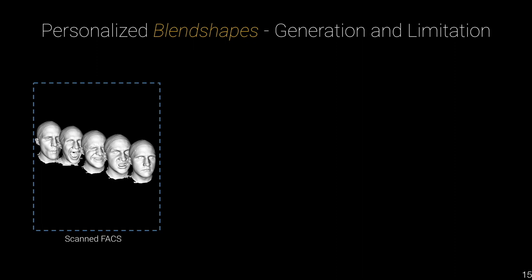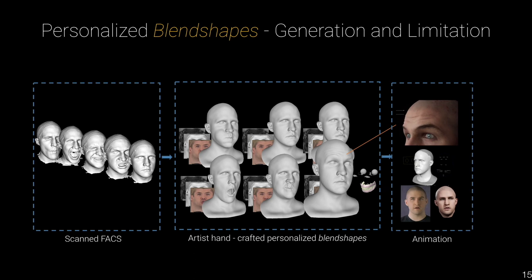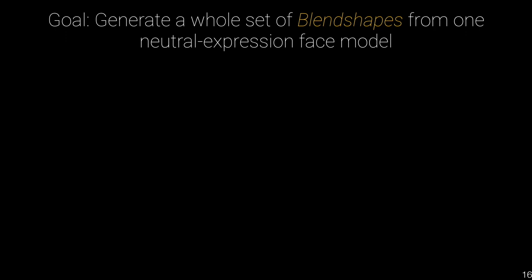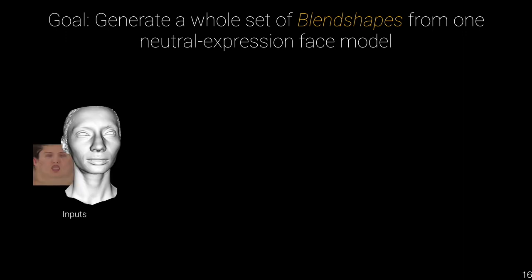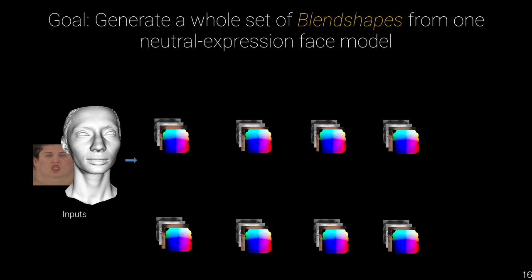The current pipeline for creating personalized blend shapes requires multiple specially designed and captured FACS expressions. We've seen how personalized blend shapes and dynamic texture can be generated from a full set of FACS expressions, but this method requires manual tuning to ensure proper isolation of shapes and alignment of textures. Our goal is to automatically generate a whole set of blend shapes from a single neutral expression face. The input is a neutral expression scan registered to our topology and a corresponding albedo, and the output is a set of blend shapes with 55 unit expressions, each including geometry, albedo, specular, and displacement map.